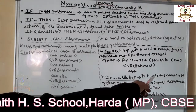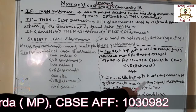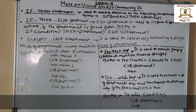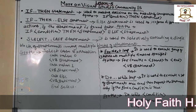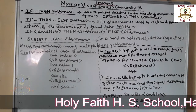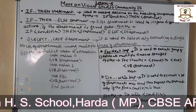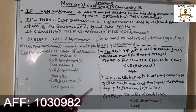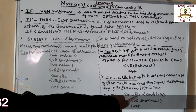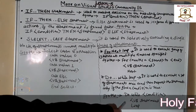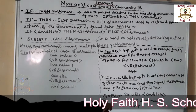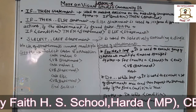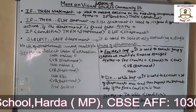The Do-While loop is used to execute a set of statements once and then repeat them only if the given condition is true. The syntax is: Do While condition, then specify the statements, followed by Loop. We will discuss all of these in practical sessions. This concludes Lesson 5.